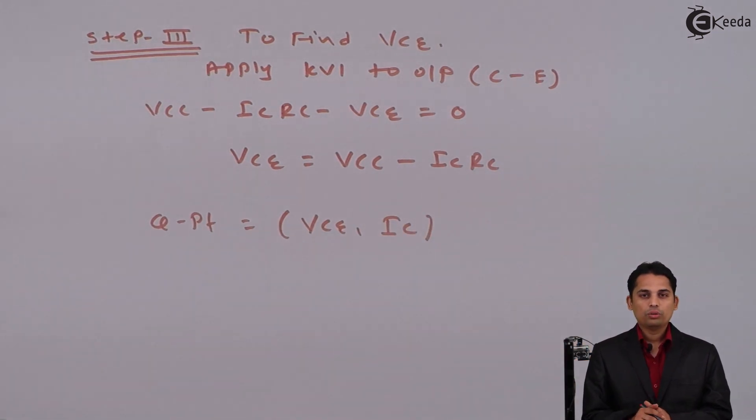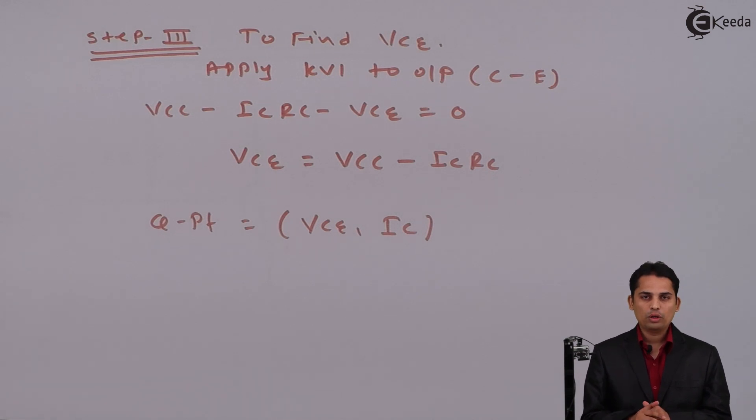The DC operating point for this particular circuit is the Q point, equal to (VCE, IC). By doing this, we can easily find out the Q point of the given circuit. Thank you.